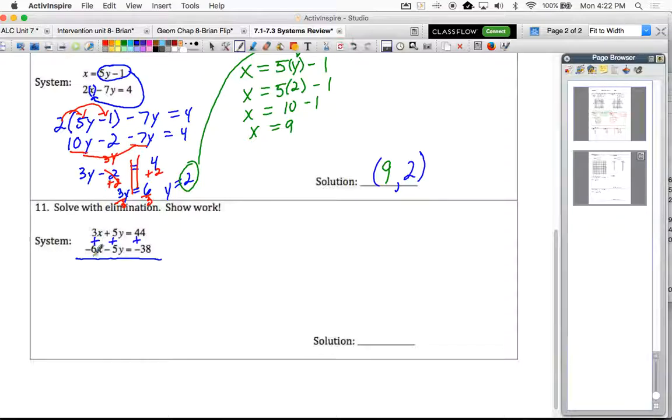And now let's add our like terms. 3x plus negative 6x is a negative 3x. 5y plus negative 5y is 0. So we'll just eliminate that from our calculation for the moment. 44 plus negative 38 is positive 6.